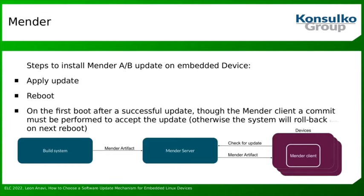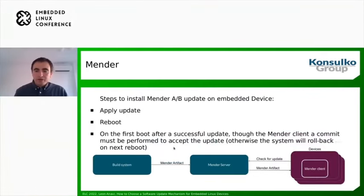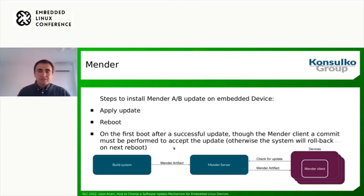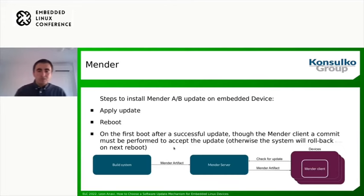Here are the steps to install Mender for A-B updates, which are pretty similar to RAUC. We apply the update and reboot the device. On the first boot after a successful update, through the Mender client a commit must be performed to accept the update. By committing, the user accepts that everything works fine and the same image will be used on the next boot. Otherwise, if commit is not performed, the system will roll back on the next reboot and use the old partition — so the changes won't be available.